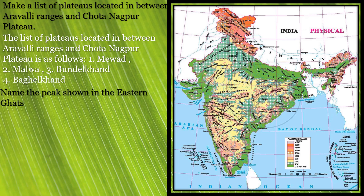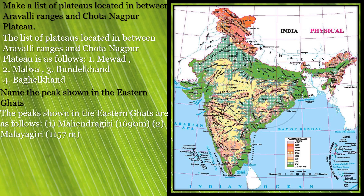Next question: name the peaks shown in the Eastern Ghats. Peaks are usually shown in triangular shape. In the Eastern Ghats, the peaks are Mahendragiri, which is 1690 meters in height, and Malaygiri peak, which is 1157 meters in height.